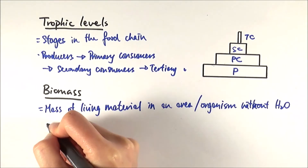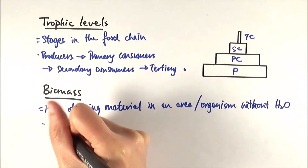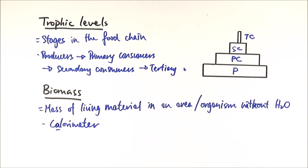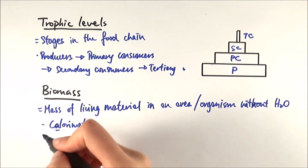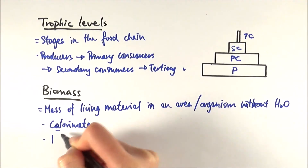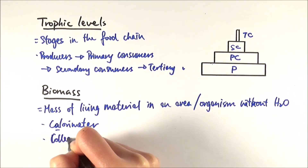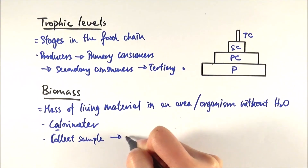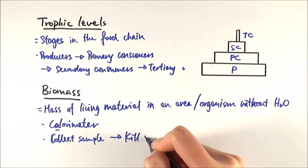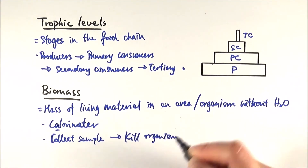You need to know how to measure energy content, or in some sense measure the biomass. In mark schemes you will often see that you can use a calorimeter — please make sure this is spelt with an 'a': calorimeter. This refers to a machine that measures the amount of calories, essentially the amount of energy within an organism. To go into more detail, first you need to collect a sample of the organism — that alone can be worth a mark in an exam.